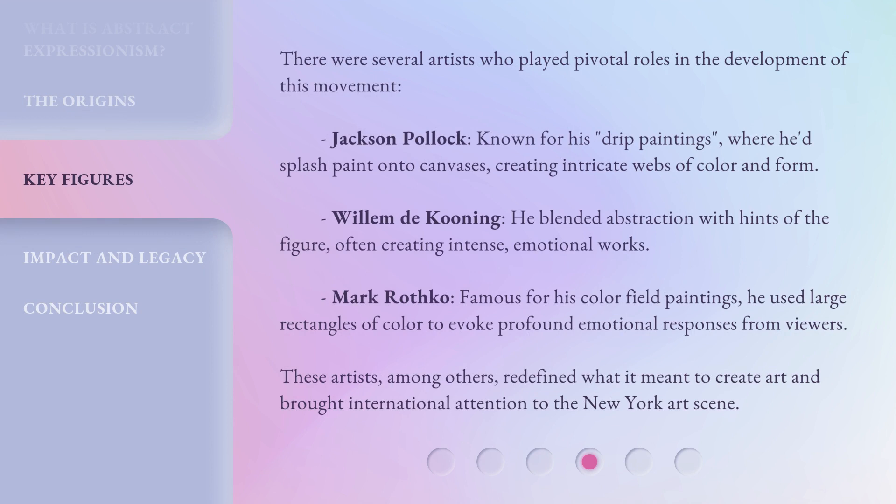Several artists played pivotal roles in the development of this movement. Jackson Pollock – known for his drip paintings, where he'd splash paint onto canvases, creating intricate webs of color and form. Willem de Kooning – he blended abstraction with hints of the figure, often creating intense, emotional works. Mark Rothko – he used large rectangles of color to evoke profound emotional responses from viewers. These artists, among others, redefined what it meant to create art and brought international attention to the New York art scene.